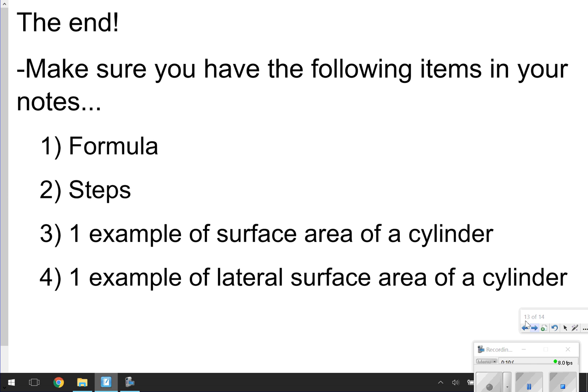Just to double check, you need to have four things in your notes before you get started on homework. The formula, the steps, or solving in order of operations. The third thing, making sure you have that one example correctly of the surface area of a normal cylinder. And then the fourth thing is just that previous example we just did, the example of lateral surface area of a cylinder, which is just, remember, the label, the rectangle label.